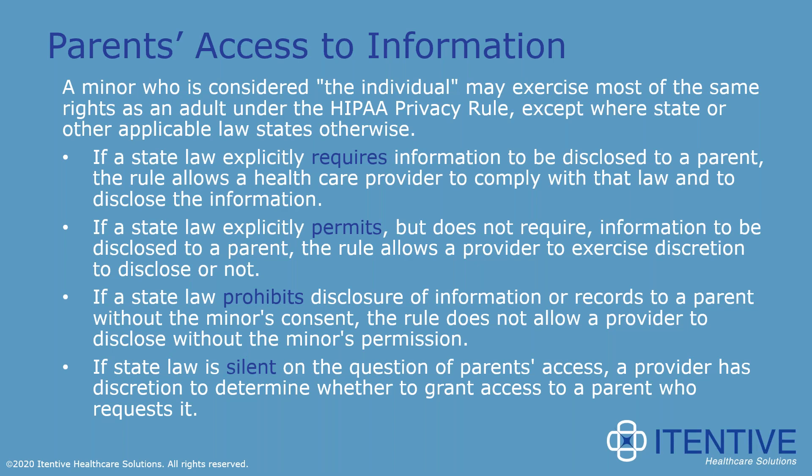State or other applicable laws can operate in one of four ways: they can require information to be disclosed to the parent — mandated in very few states; permit information to be disclosed to the parent, at the provider's discretion; prohibit information from being disclosed to the parent; or the state law may be silent on this matter, leaving the choice of record access up to the provider. The key words for each scenario are: require, permit, prohibit, or silent.